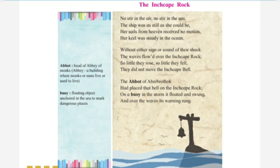Now let's deal with the poem 'The Inchcape Rock'. The poem begins with a sailing ship on calm waters on a windless spring morning. The first stanza: 'No stir in the air, no stir in the sea, the ship was as still as she could be, her sails from heaven received no motion, her keel was steady in the ocean.' Here, 'stir' means movement and 'keel' means a kind of sea support — the structural support of a ship.